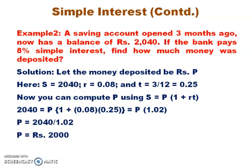You can compute P using S equals P into 1 plus RT. So 2040 equals P into 1 plus 0.08 into 0.25. When you solve this equation further, you get P equals rupees 2000.